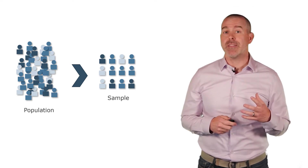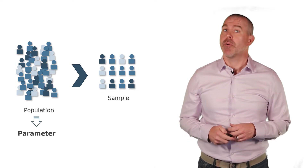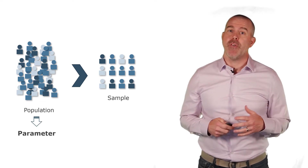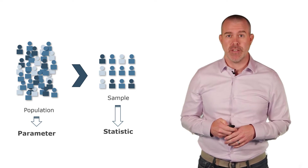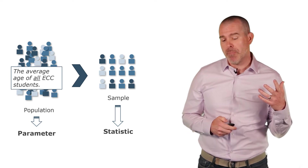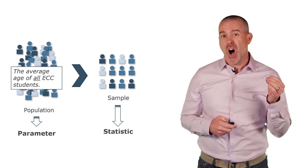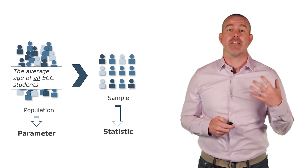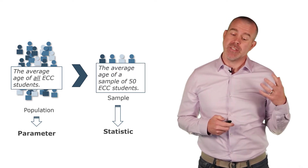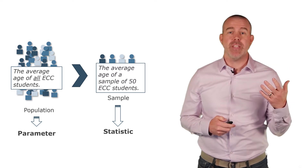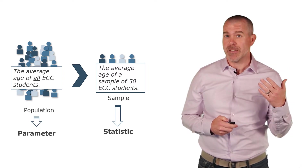When we calculate something about the population, we call that a parameter. When we do the same for a sample, we call it a statistic. For example, the average age of all ECC students is a parameter. If we talked about the average age of a sample of, say, 50 ECC students, that is a statistic.